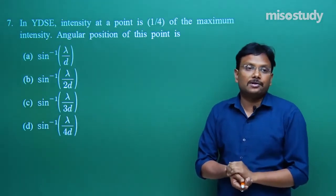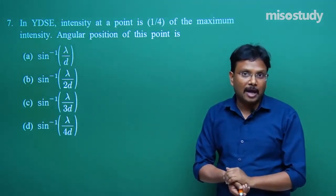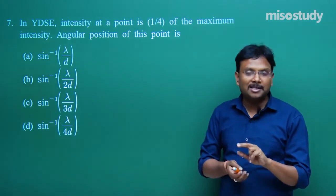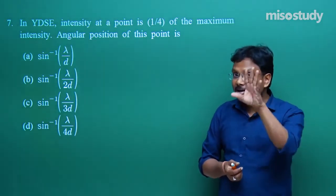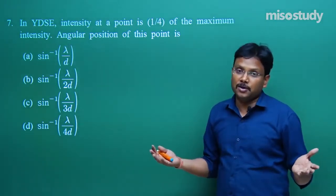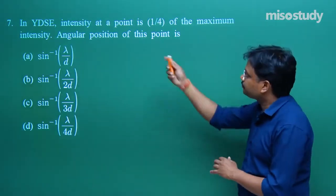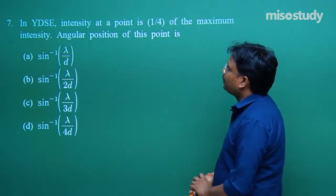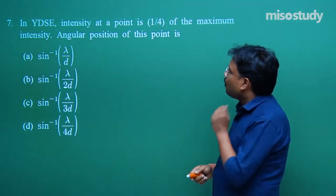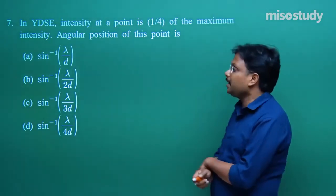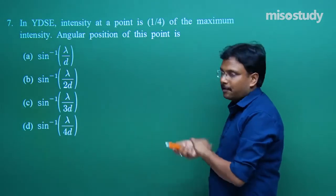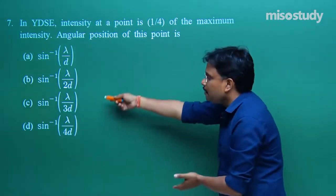Just a few days back in a recent exam there were 3–4 questions from optics: one on polarization, one on Young's double slit experiment, and two from ray optics. So if you are regularly watching Meso-Study videos, you will get a lot of benefit. In question 7: in Young's double slit experiment, intensity at a point is 1/4 of the maximum intensity. What is the angular position of this point? I will use the direct formula.